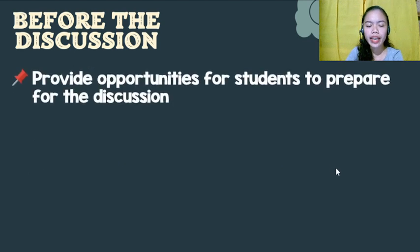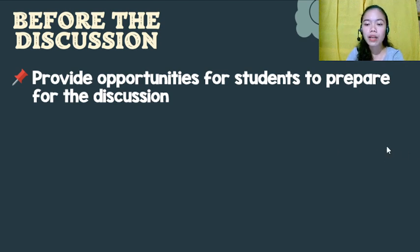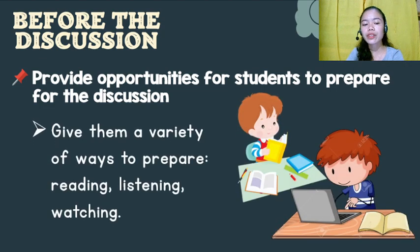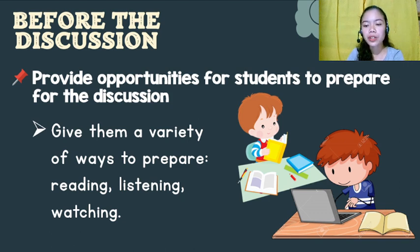Provide opportunities for students to prepare for the discussion. For example, with a topic like martial law, some students may not be knowledgeable enough about what happened during that time, so you have to give them a variety of ways to prepare — like reading, listening, or watching. Students are much more likely to participate if they are familiar with the topic of discussion. Those are the things you should do before the discussion.